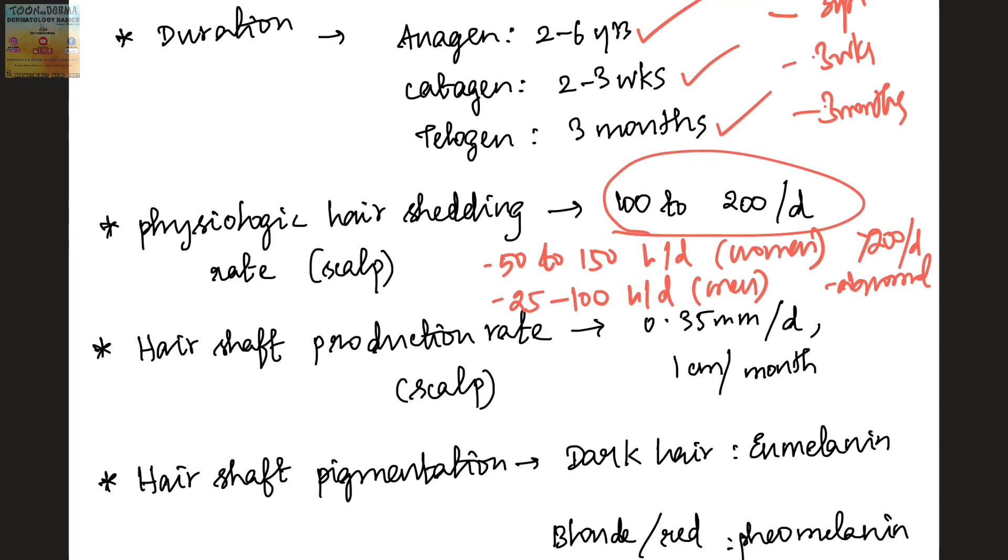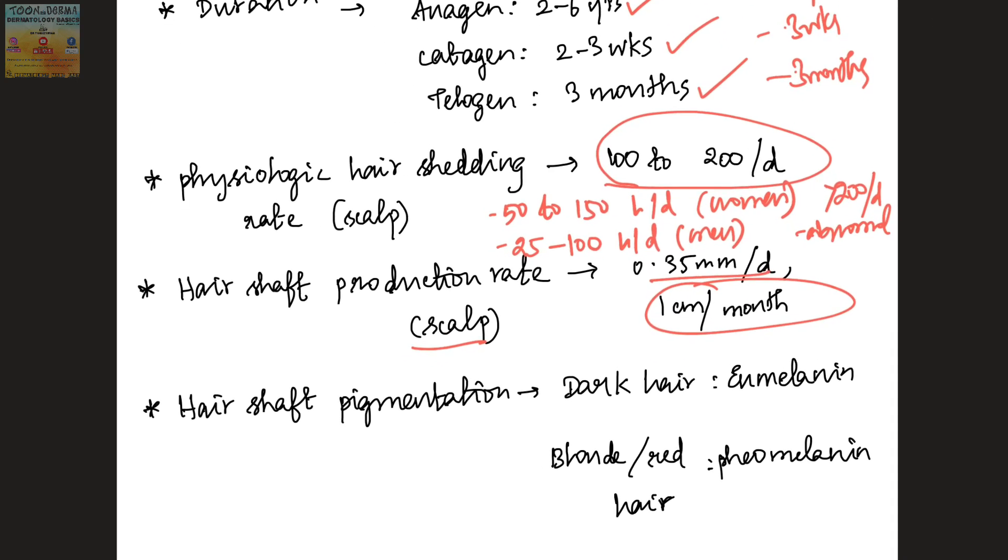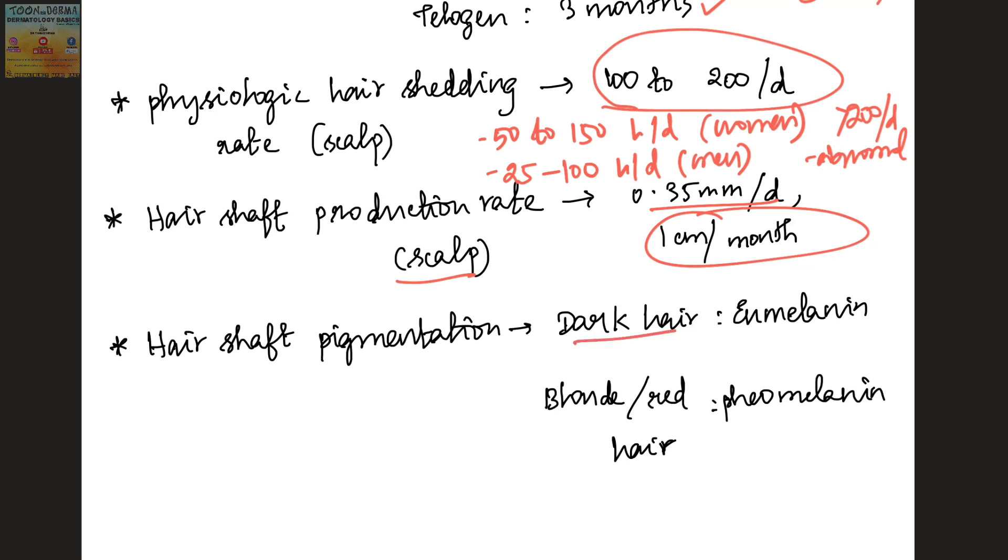The hair shaft production rate in the scalp is about 0.35 mm per day or 1 centimeter per month. Hair shaft pigmentation: dark hair contains eumelanin, whereas blonde or red hair contains pheomelanin.